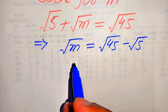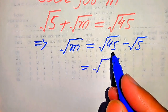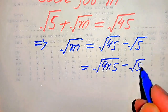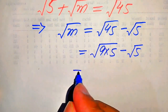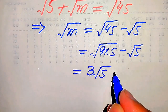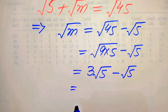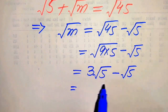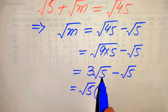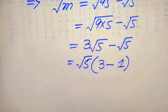Here we need to remove the square root sign on both sides, so we do some working on the right hand side. First we make the prime factors of 45: we know that 45 = 9 × 5, so we have √(9×5) minus √5. We know that √9 = 3, giving us 3√5 minus √5. Since √5 is common to both terms, we take out √5 and get √5 times (3 minus 1).